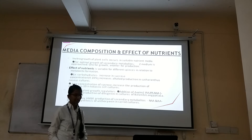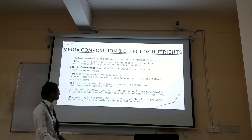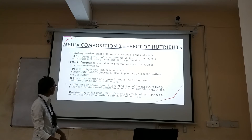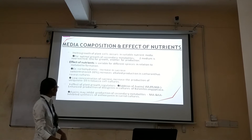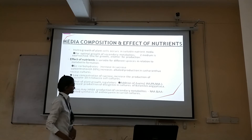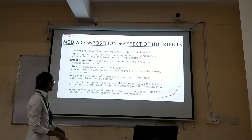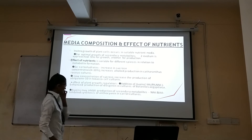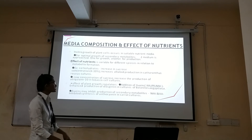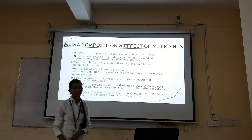Carbohydrates — for example, sucrose: an increase in sucrose concentration of 4–10% increases alkaloid production in Catharanthus roseus cultures. A low concentration of sucrose increases ubiquinone production in tobacco cell cultures. Regarding plant growth regulators, addition of auxins — IAA (indole-acetic acid), IPA (indole-propionic acid), or NAA (naphthalene-acetic acid) — enhances production in Glycine max cultures. However, auxins may also inhibit secondary metabolites; for example, NAA and IAA inhibited synthesis of anthocyanin in carrot cultures.